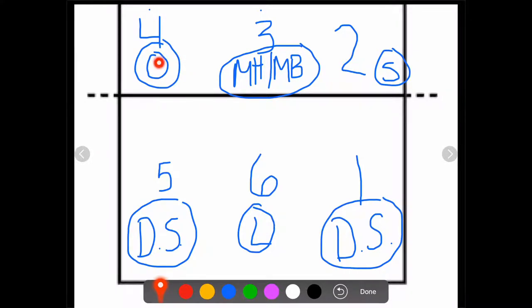The middle blocker is the only person that does substitutions behind the 10-foot line to switch out with the libero. The outside players or any other player, if they do substitutions, they have to do it here. Middle blockers, they just switch out for liberos.